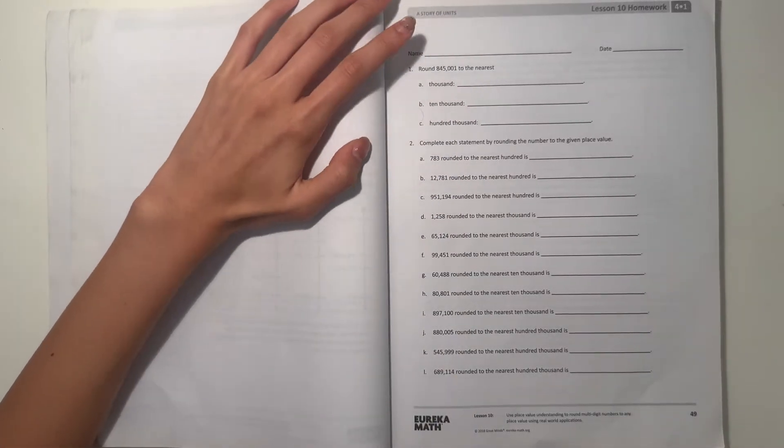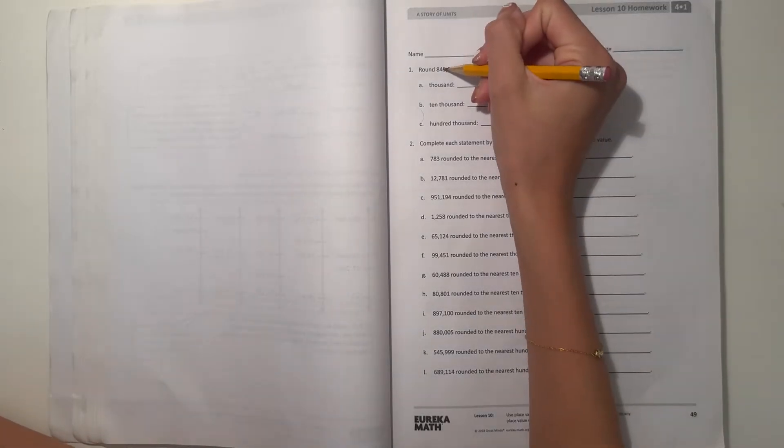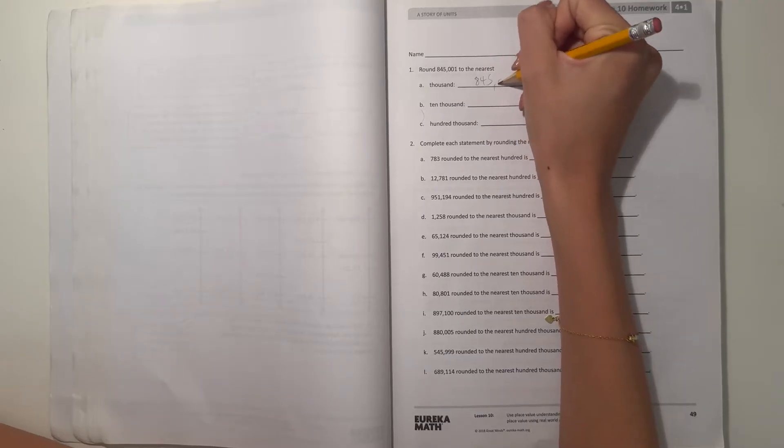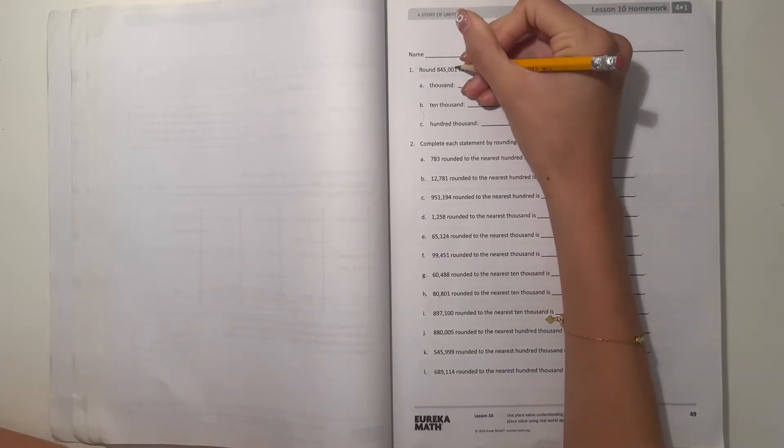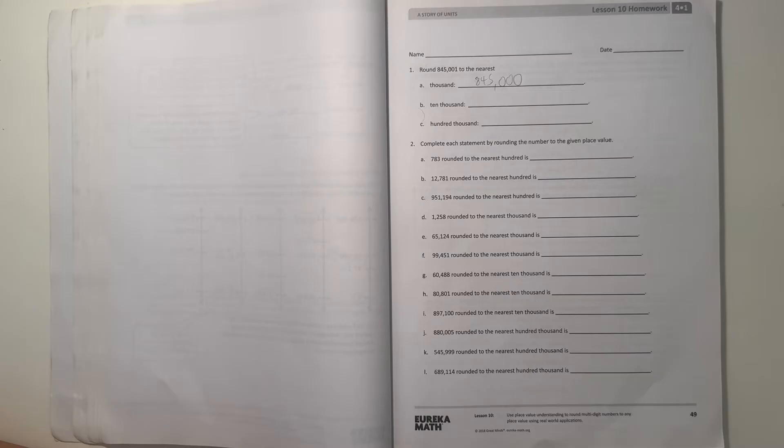Number 1, round 845,001 to the nearest thousand. So thousand will be this place value and we would round this to 845,000 because there's only one and if we wanted to round it up to 846,000, we needed a 5 here because that's not enough.